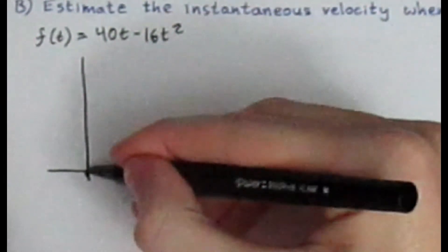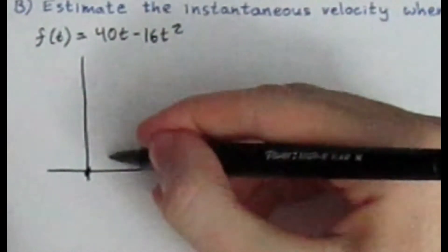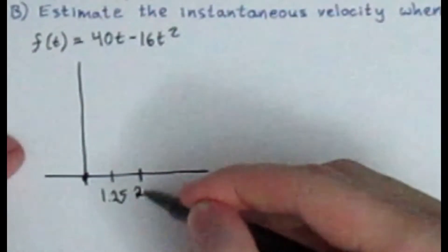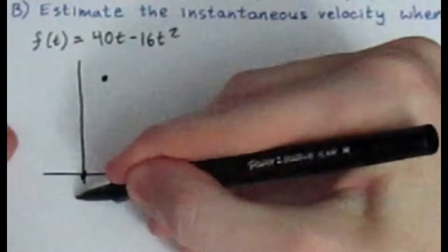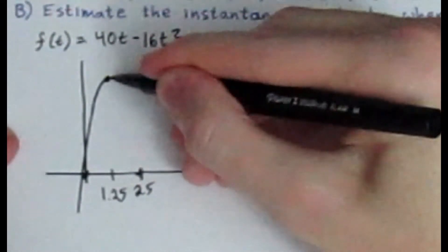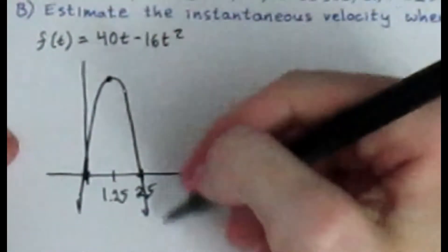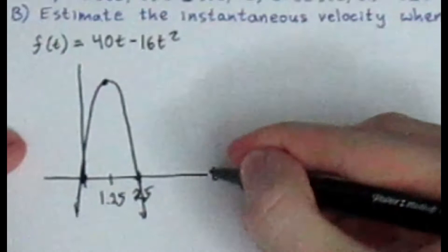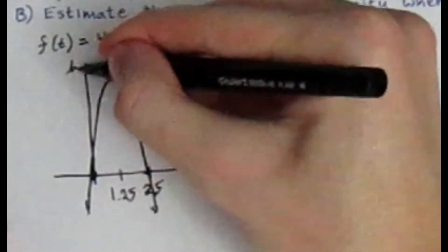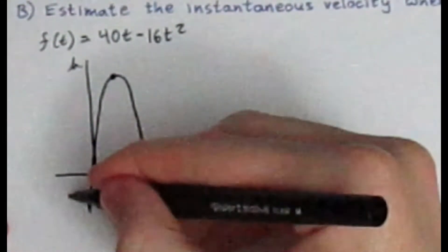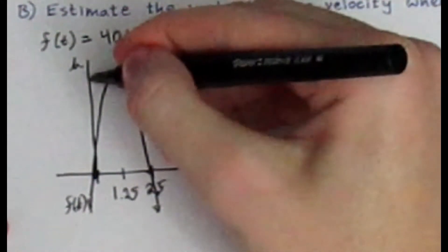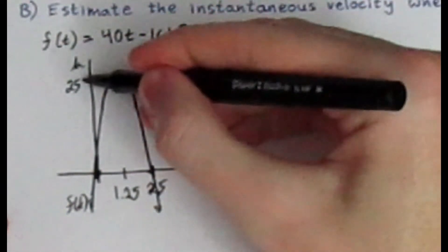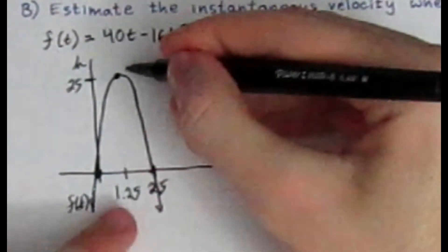I already calculated that. We have the point (0, 0), the vertex has a t value of 1.25, and then it crosses 2.5. The parabola goes something like this. We have our independent variable t and our height as the dependent variable, function f of t. The max height is 25, giving us the point (1.25, 25).